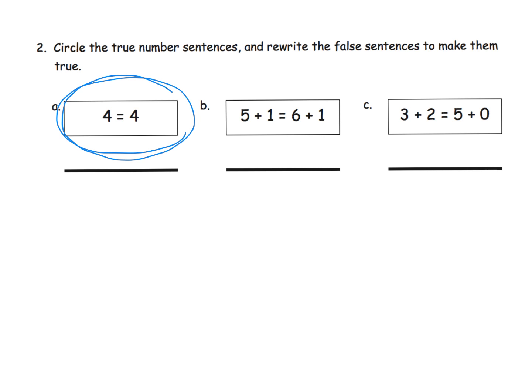Well, four does indeed equal four. And I can see that three plus two does indeed equal five plus zero. So those are our true statements. Now, the false statement, I can see that this is a six and this equals a seven.